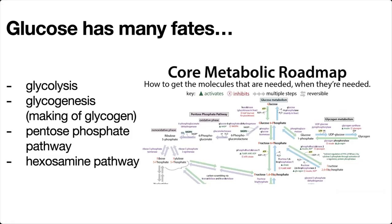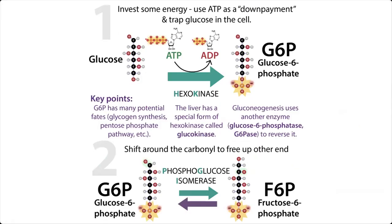We're going to need to trap the glucose inside of the cell so it can't just freely diffuse back out through one of those channels, and so that we keep driving the reaction forward, and so that we're phosphorylating this compound so that we can trap the smaller compounds in the future. In order to do all this, we're going to have to invest — we'll spend some energy now and get some back later.